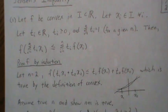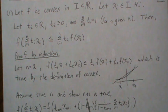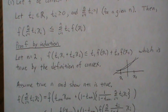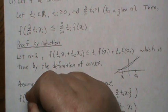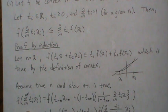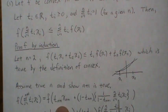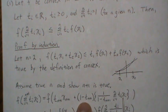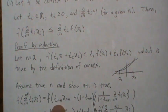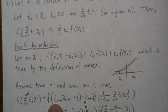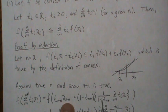Now let's assume it's true for n and show it's true for n+1. We want to show F applied to the sum from 1 to n+1. We break the sum into the last term t_{n+1} and then every term from 1 to n. We multiply and divide by (1 - t_{n+1}) so that piece is just a well-chosen one, separating the first piece and the rest of the sum.